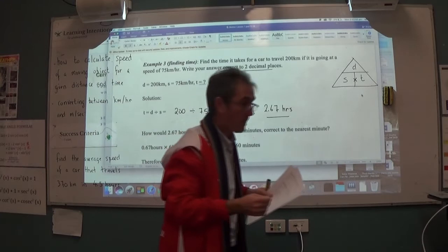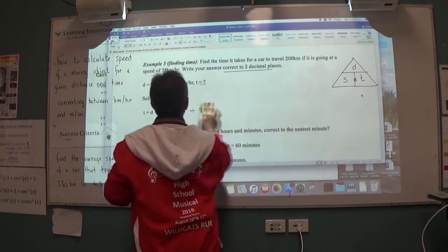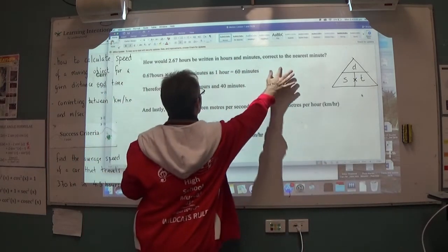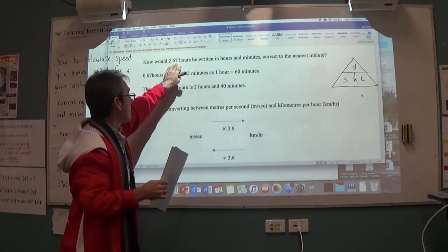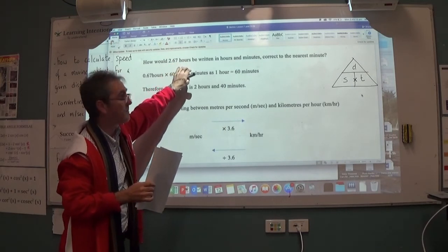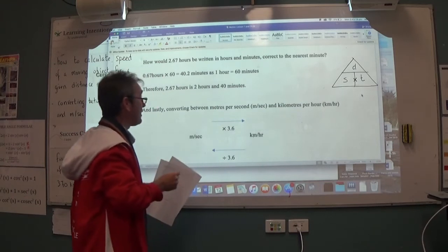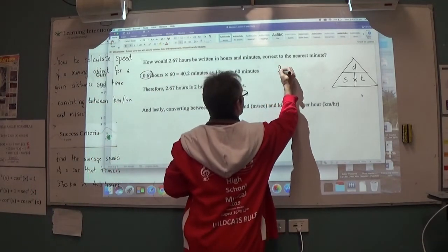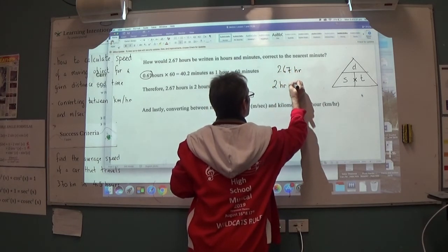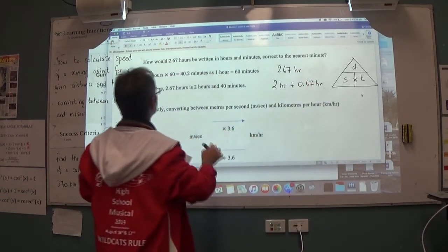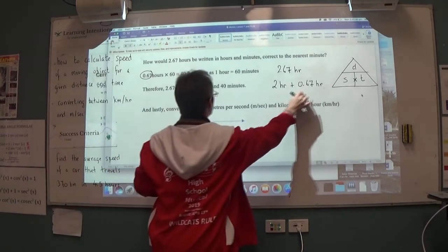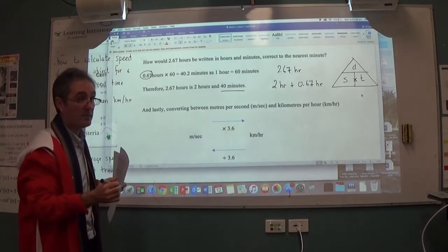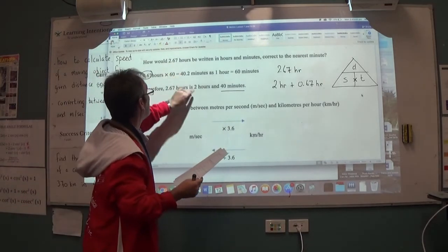So I've now done three examples in each case here regarding the use of the speed triangle to calculate speed or distance or time. The last thing I want to show you before you start this worksheet is, in some questions, they will want you to express your answer not as a decimal but in hours and minutes. What I mean is that in the previous example which I showed you to calculate time, our answer was a decimal answer, it was 2.67 hours. Now, what about if I was required to write the answer in hours and minutes to the nearest minute? This requires looking at the decimal part of the answer. 2.67 hours will be 2 whole hours plus another .67 of an hour. And what I do is, given that there are 60 minutes in one hour, I get the .67 times the 60, and I get 40.2 minutes. Therefore, to the nearest minute, that answer will be 2 hours and 40 minutes.